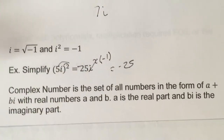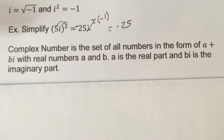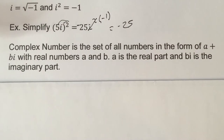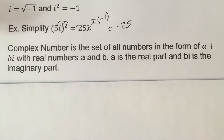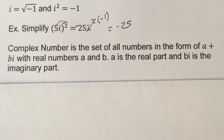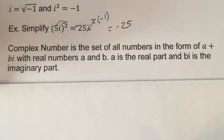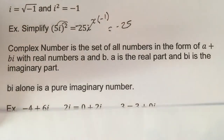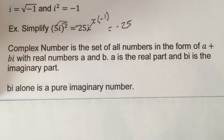So what we're dealing with are complex numbers. A complex number is the set of all numbers in the form a plus bi. Here, a is the real part, b is also a real number, and bi is the imaginary part. bi alone is a pure imaginary number.